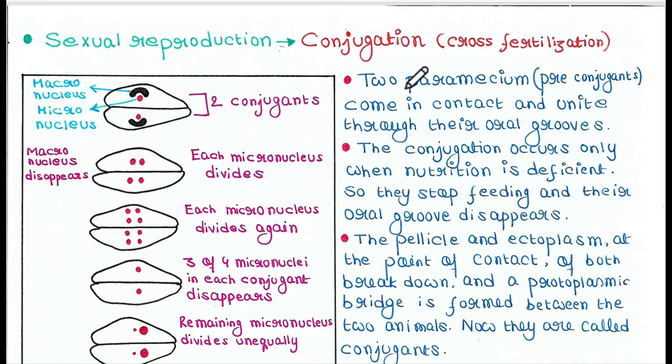We have two paramecium here — two cells. Before starting the process, they are known as pre-conjugants. These two cells come in contact and unite through their oral grooves. We know that oral grooves are present in paramecium and help in the feeding process. After uniting, they are now known as conjugants.